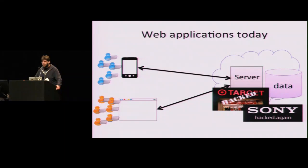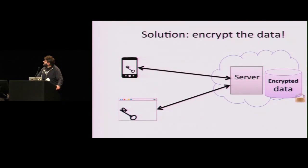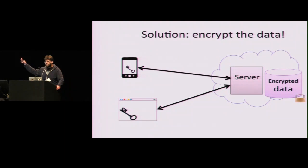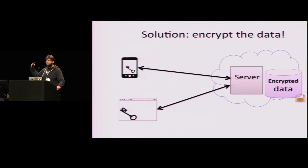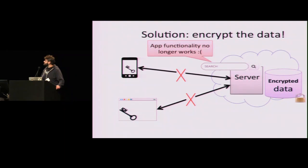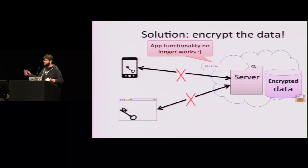This is a bad thing that we generally want to avoid. One solution proposed is to encrypt the data on the server — data generated by clients encrypted with a key stored only on the client and never seen by the server. So when there's a data breach, nothing's actually leaked because everything's encrypted. But the problem is that basic stuff like searching your data doesn't work anymore, because this encryption removes all functionality from the data.